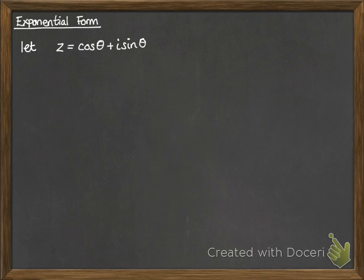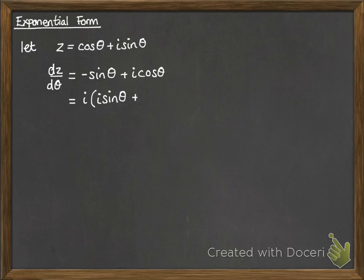So start with z being the complex number cos theta plus i sine theta. If you differentiated that, then you get dz by d theta would be minus sine theta plus i cos theta, which we can rewrite as being i.